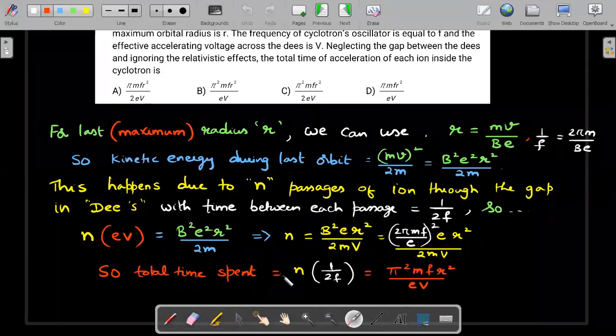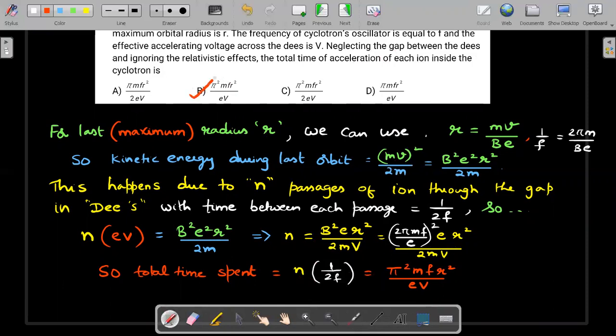Therefore, the time spent should be each time. Remember, it will only spend half the time period, which is one by 2F because it's half semicircle period. So the time spent would be N times. Actually, there is extra time because in the gap also it will spend some time. He's talking about that in the question as neglecting the gap between the Ds. So whatever time he's calculating, he's taking it only in the semicircular part. So that would ensure that the answer is B option.